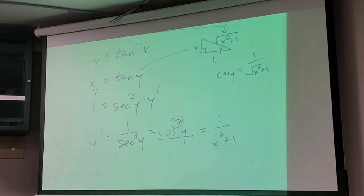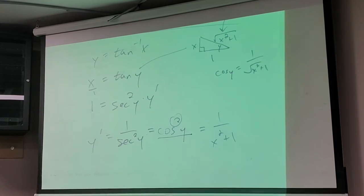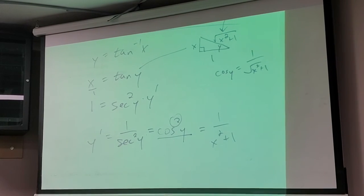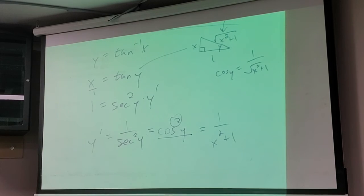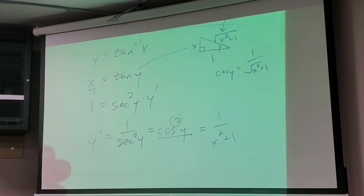What do you think the derivative of inverse cotangent would be? Negative 1 over x squared plus 1 — you could do it the same way. We've got the three main ones down: sine, cosine, and tangent. We could still do secant, cosecant, and cotangent inverses.